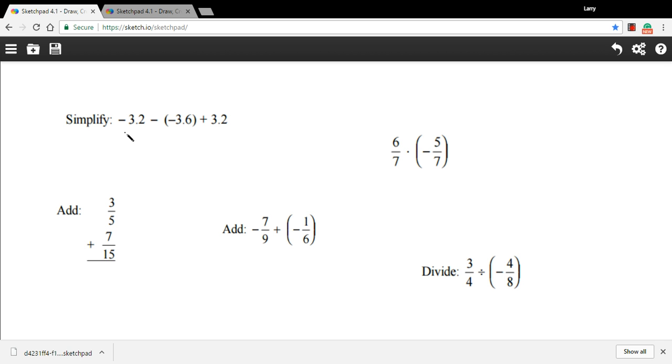This first one, we're just doing some adding and subtracting of decimals. You can pull out your calculator if it's confusing. I'm going to do this one by hand. We have negative 3.2 minus a negative 3.6. The key thing to remember is that when you minus a negative, you're adding it. Two negatives make a positive.